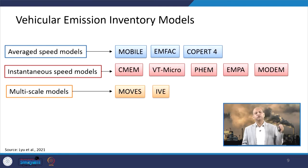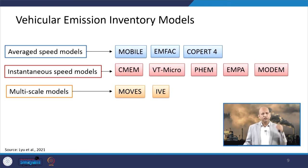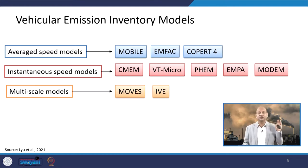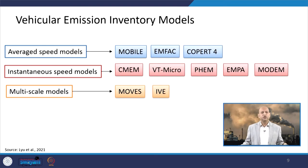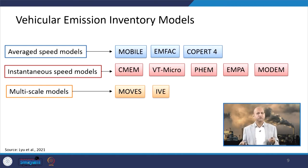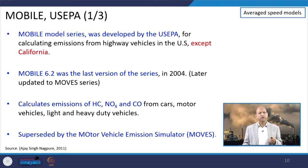When we talk about inventory models — these are mathematical models with different characteristics — we can broadly categorize them into average speed models, which use the average speed a vehicle runs at because we do not have driving cycle related data. Then we can have instantaneous speed models, which have driving cycle related patterns, so for each second they can estimate emissions. Multi-scale models are also there which can handle exhaust, non-exhaust, and evaporative emissions — very versatile models.